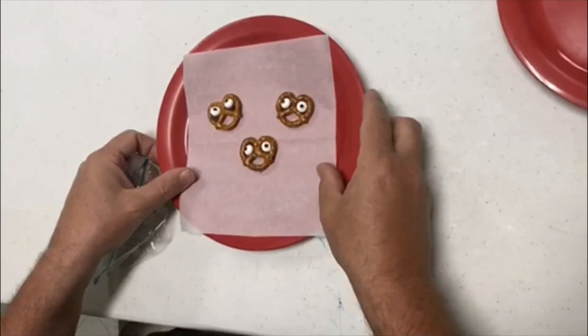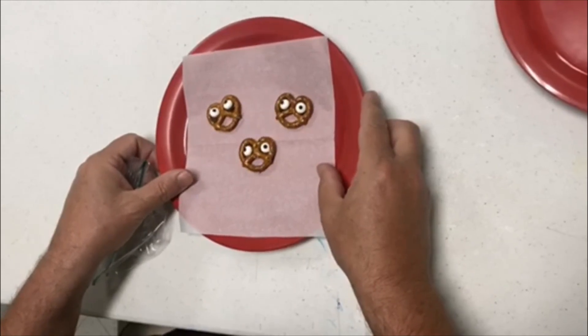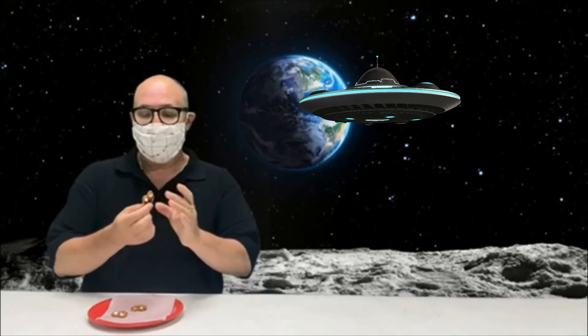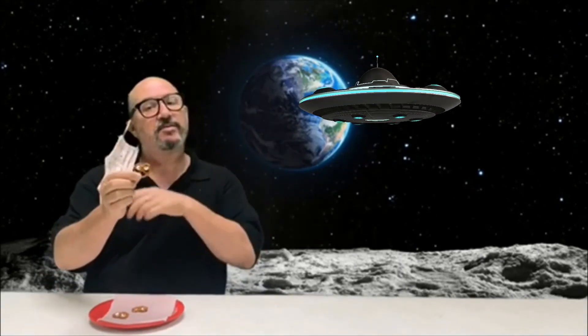Now we're going to stick this in the refrigerator or the freezer until it hardens. And now we're finished and here's what you got. Oops, I have my mask on because I was at this place. There you go. Your little E.T. looking alien. Want one?